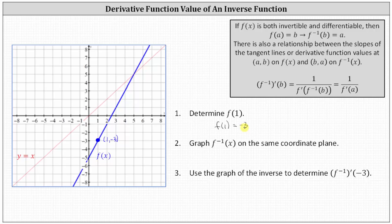Number two, we're asked to graph f inverse of x on the same coordinate plane. Notice the inverse function is a function of x. If we take a look at our notes above, if f of x is both invertible and differentiable, then f of a equals b implies f inverse of b equals a. f of a equals b indicates the point a comma b would be a point on the graph of f of x, and f inverse of b equals a indicates the point b comma a would be a point on the graph of f inverse of x.